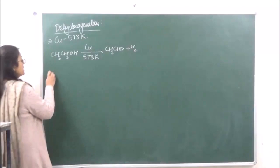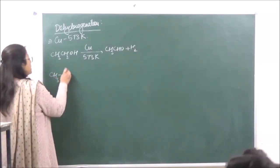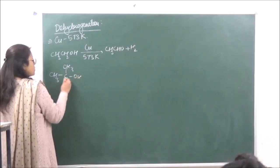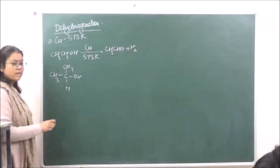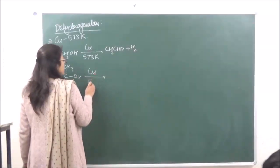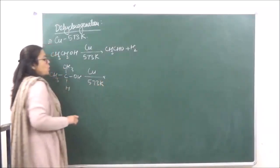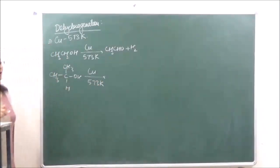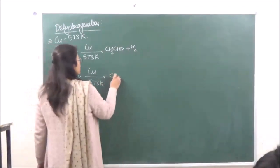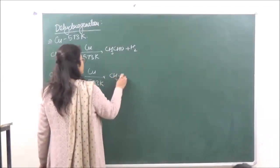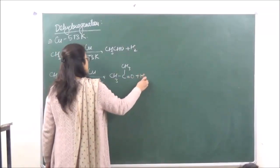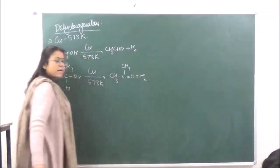Second, if we are taking a secondary alcohol, the reaction conditions are kept the same. When treated with copper at 573 Kelvin, this is going to give us a ketone plus H₂.